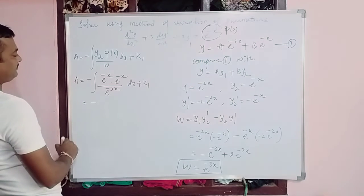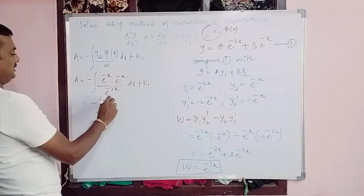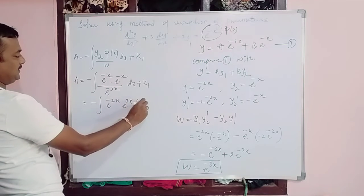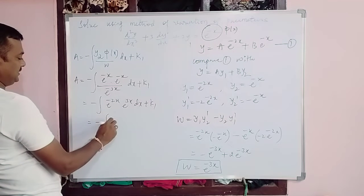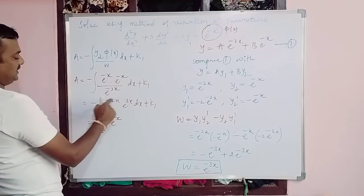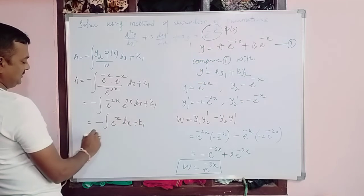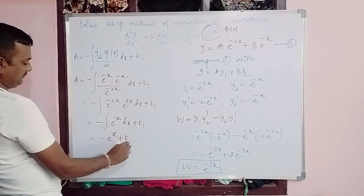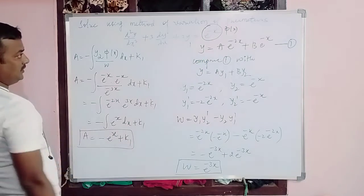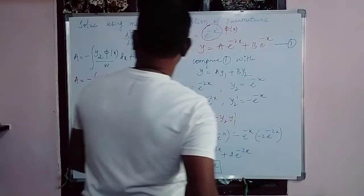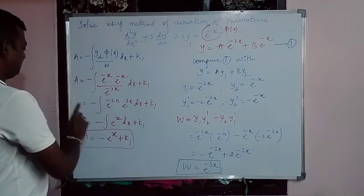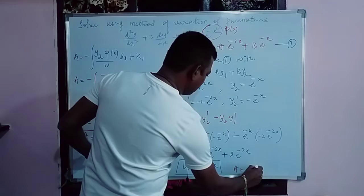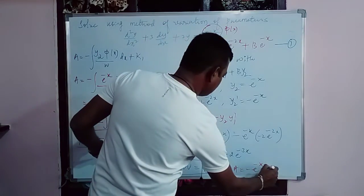Simplifying: e^(-x)·e^(-x) = e^(-2x) in the numerator, divided by e^(-3x), gives e^(x). So A = -∫e^(x)dx + k1 = -e^(x) + k1. Wait, correcting: the integration of e^(-3x)·e^(-x)/e^(-3x) simplifies and A = -e^(-x) + k1.